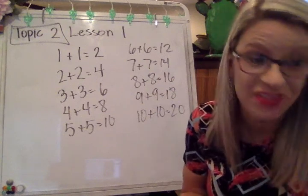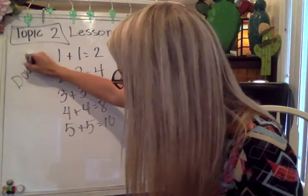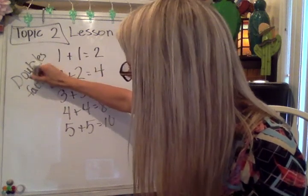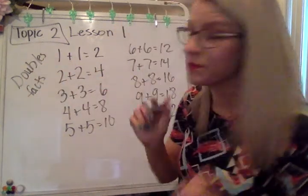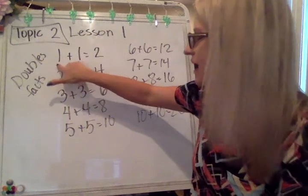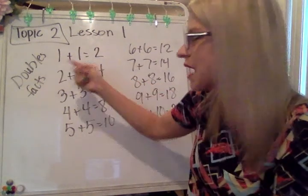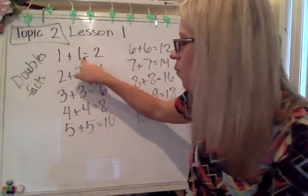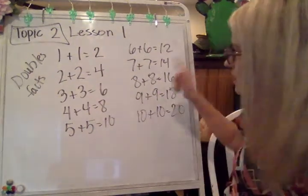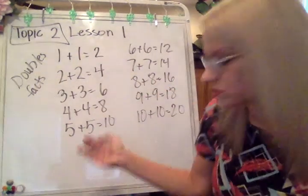I wanted to have this out. Remember, these are doubles facts — that means that the addends are the same. So one plus one has the same addend of one, five plus five has the same addend of five, and eight plus eight has the same addend of eight. That's what makes them a doubles fact.